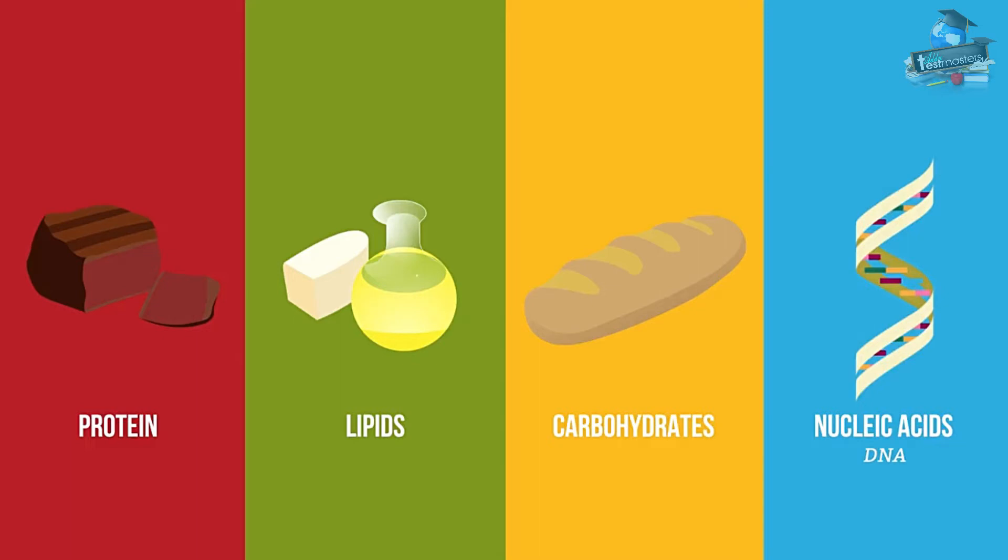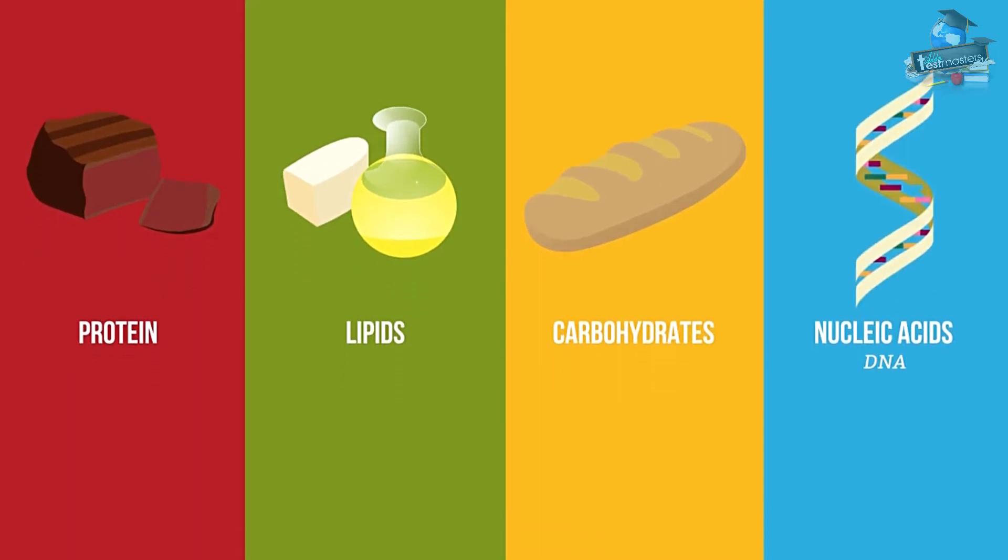So what are these all made of? Well, carbohydrates and lipids are really simple. They just contain three elements: carbon, hydrogen, and oxygen.